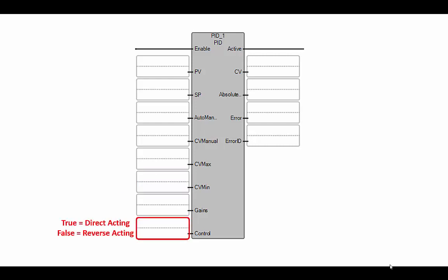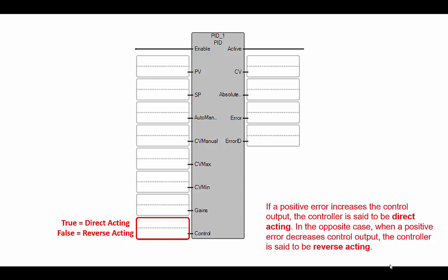This control variable here is a boolean that should be true or false. True if we want this controller to be a direct acting controller, or false if we want it to be a reverse acting controller. Let me explain a little bit about what direct acting versus reverse acting means. If a positive error between the process variable and set point would increase the controller output, then the controller is said to be direct acting.